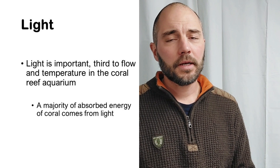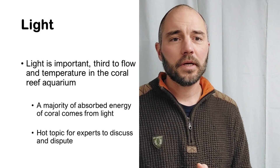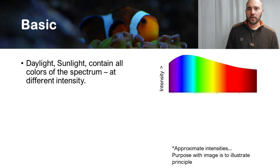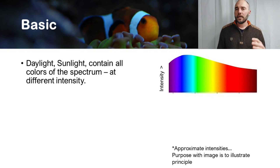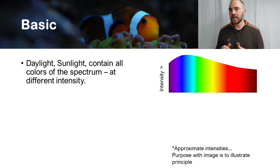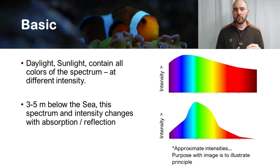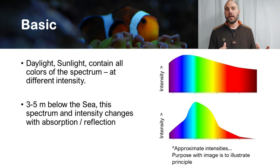Furthermore, light is a very hot topic for experts within the hobby to discuss and dispute. We will keep this basic and start with daylight or sunlight: it contains all the colors of the spectrum but at different intensities. Then as daylight or sunlight goes through the water and down to the coral reef three to five meters below the sea, this spectrum and the intensity has changed with absorption and reflection.